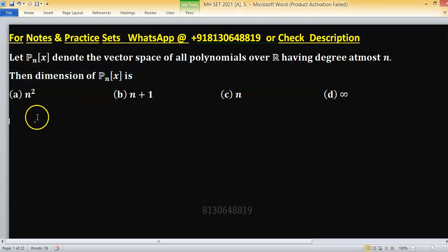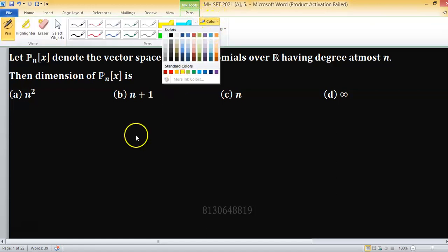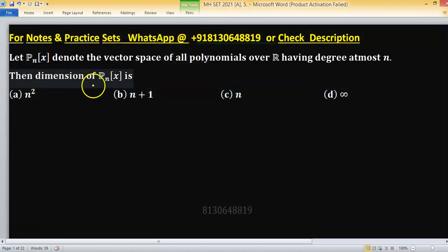Let P_n(x) denote the vector space of all polynomials over R having degree at most n. Then dimension of P_n(x) is.